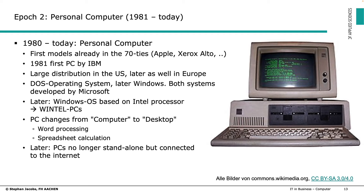Besides those differences, early PCs and today's PCs are more or less the same. You can discuss which company produced the first PC — there were Apple, the Xerox Alto, and others — but the first that became a mass product was the 1981 IBM PC shown in the photo, with large distribution in the US and later in Europe.